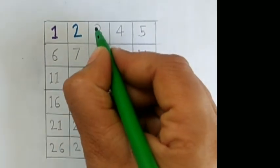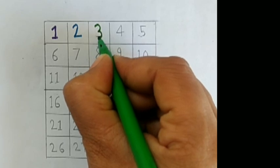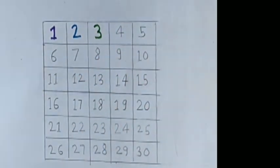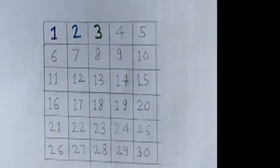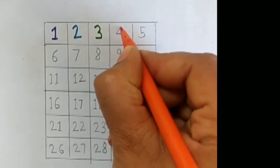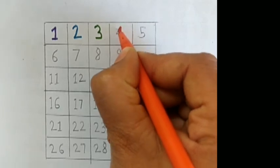What comes after number 2? Number 3, green color. Number 4, orange color.